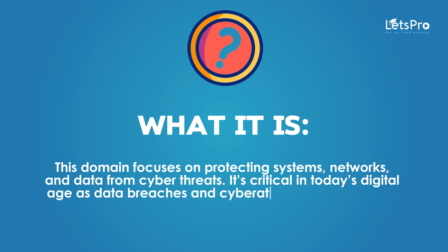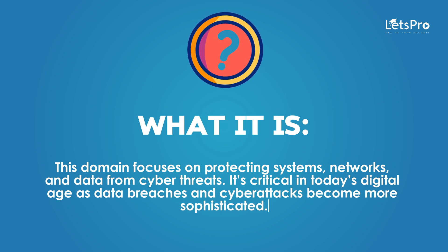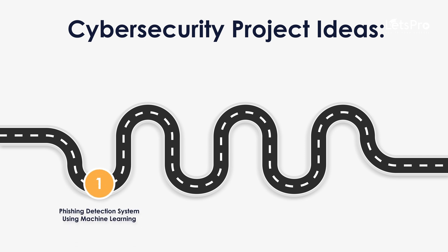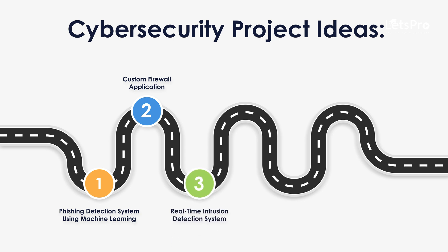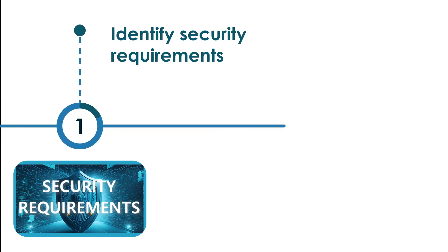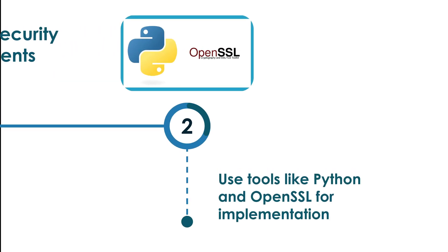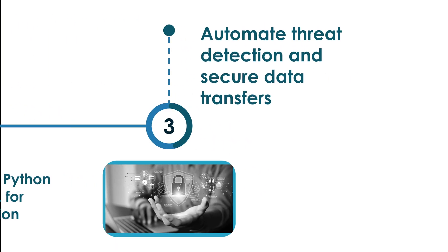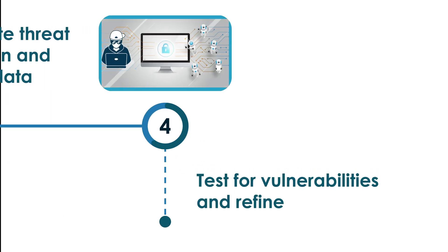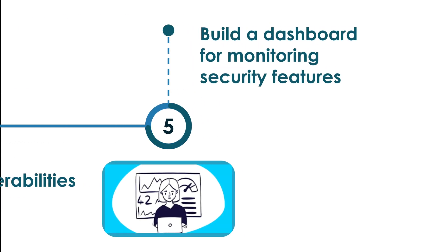Project ideas: Phishing Detection System using Machine Learning, Custom Firewall Application, Real-Time Intrusion Detection System, Secure File Transfer System using Encryption, and Password Strength Analyzer. For prototype development: identify security requirements, use tools like Python and OpenSSL for implementation, automate threat detection and secure data transfers, test for vulnerabilities and refine, and build a dashboard for monitoring security features.